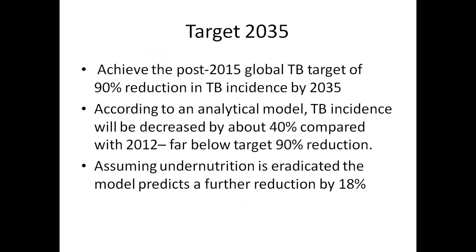Target 2035: The new target is to achieve a 90 percent reduction in TB incidence by 2035. An analytical model to estimate the effect of undernutrition on projected TB epidemiology until 2035 was created. According to this, TB incidence will be decreased by about 40 percent compared with 2012, which is still far below the target 90 percent reduction. Assuming undernutrition is eradicated, the model predicts that the 2035 global TB incidence would be further reduced by 18 percent, with the effect being highest in the African region.